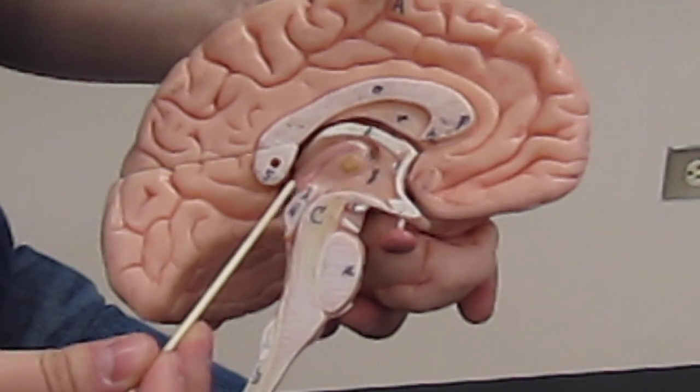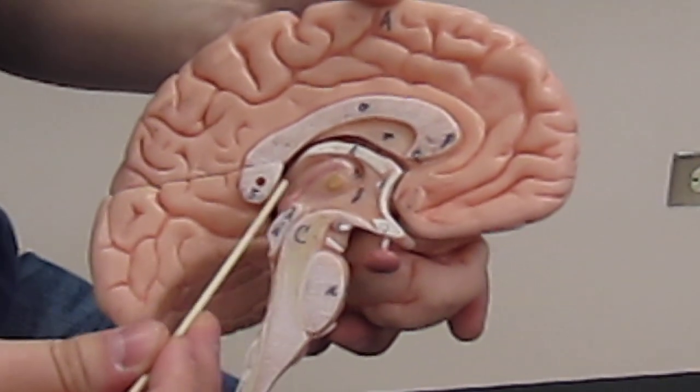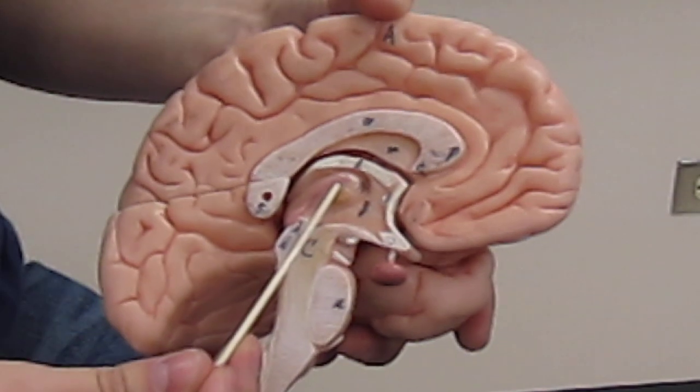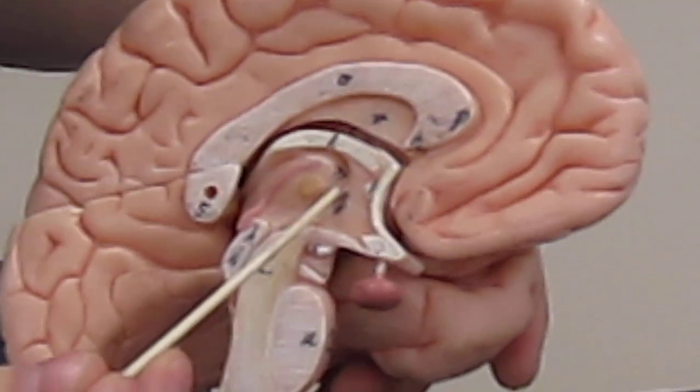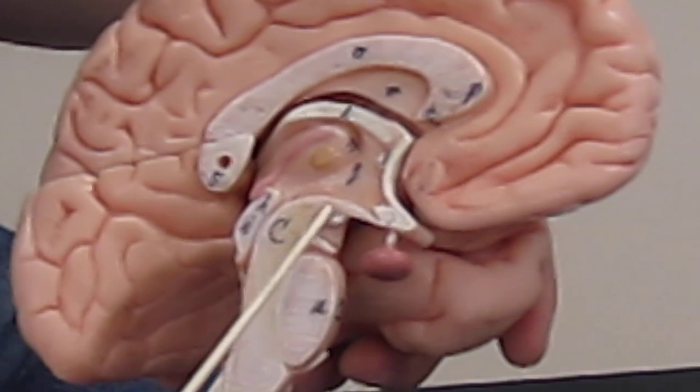This is the pineal body, this is the thalamus, and the intermediate mass of the thalamus. This is the hypothalamus, this triangular region, and it also has the mammillary body.